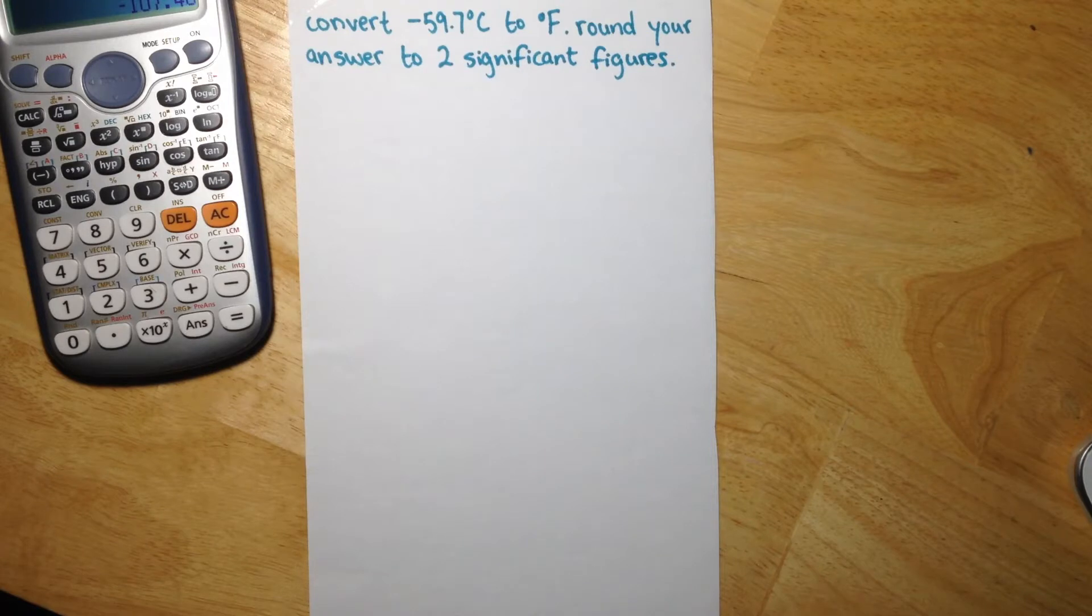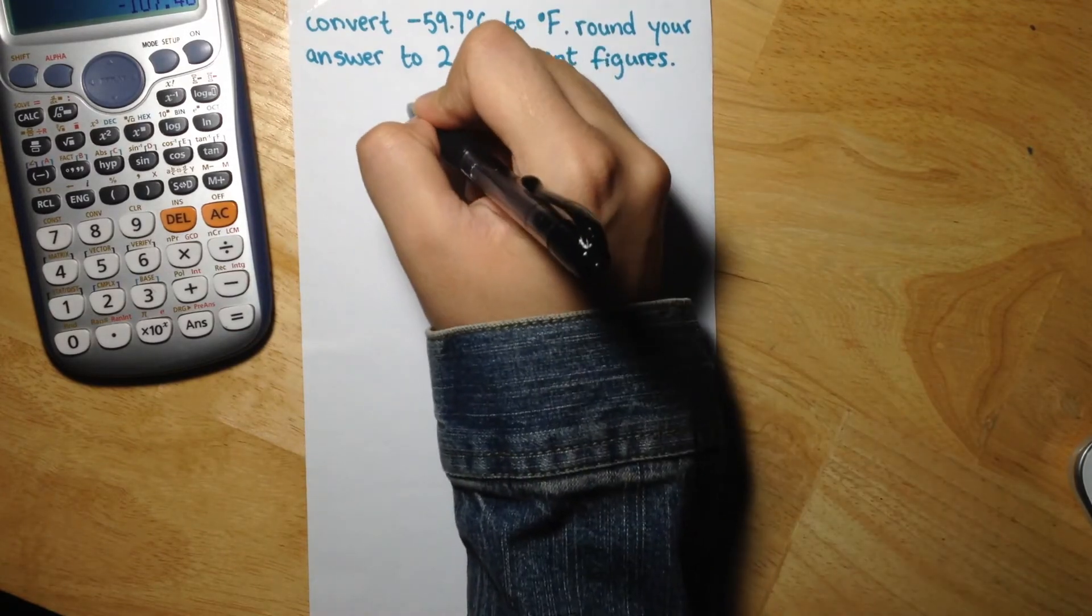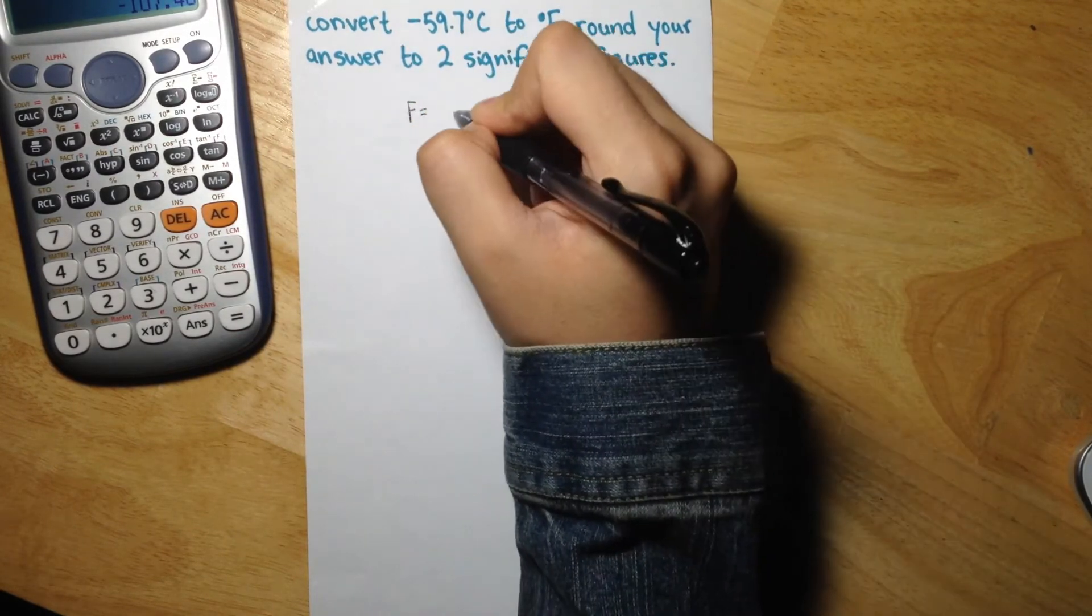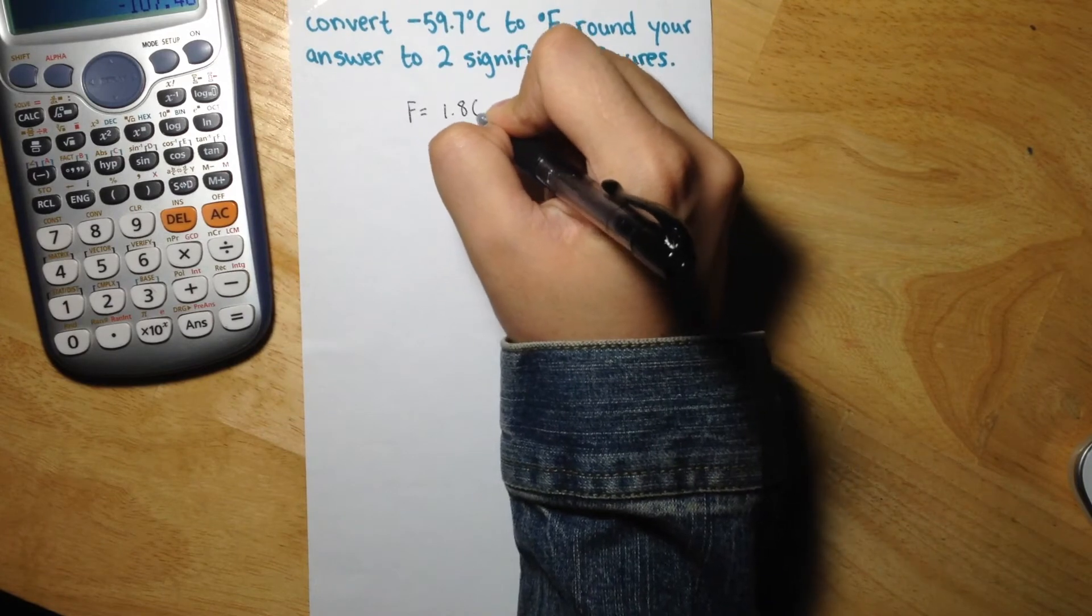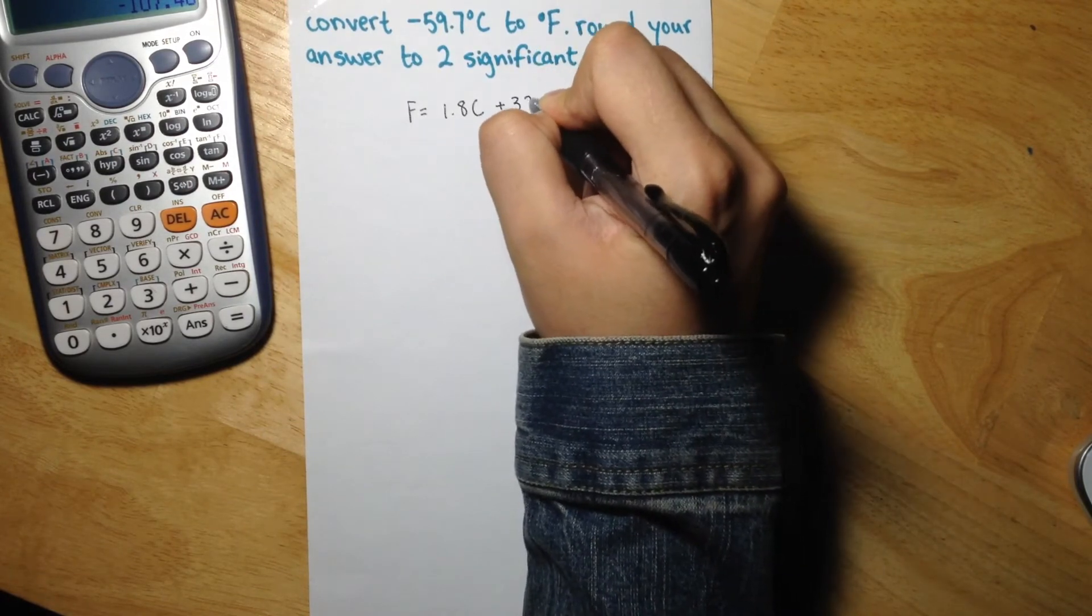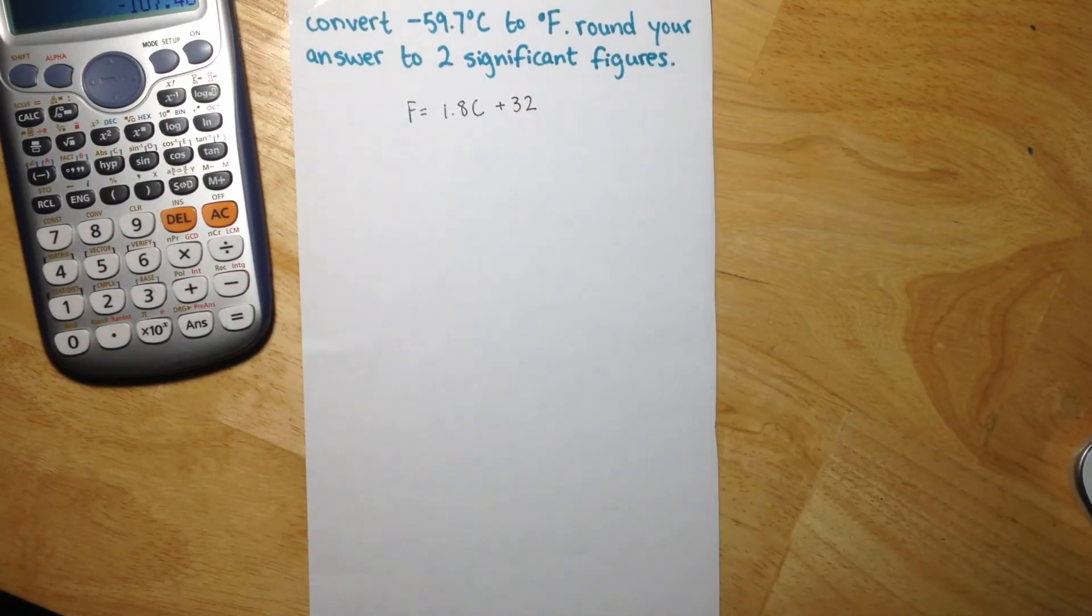So the formula to convert a temperature from Celsius to Fahrenheit is F equals 1.8 C plus 32. So the temperature in Fahrenheit equals 1.8 times the temperature in Celsius plus 32.